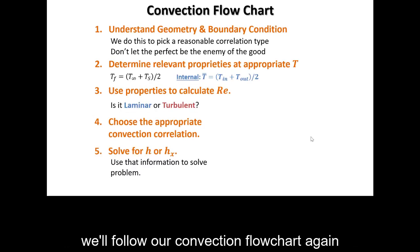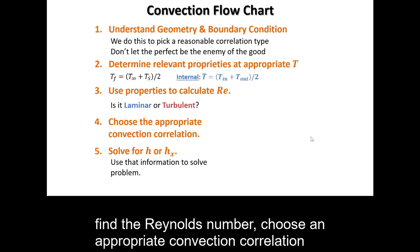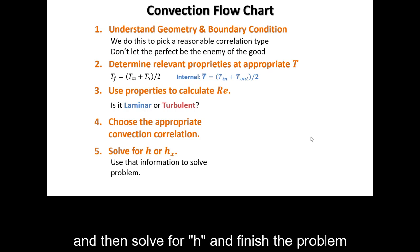We'll follow our convection flowchart again, looking to understand the geometry and boundary conditions, determine relevant properties, find the Reynolds number, choose an appropriate convection correlation, and then solve for h and finish the problem.